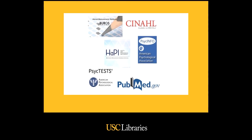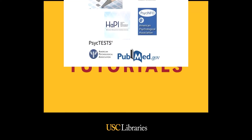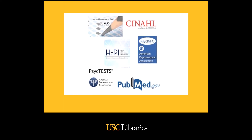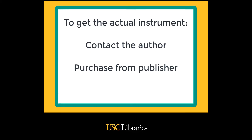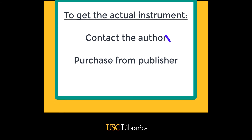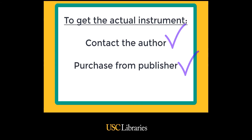Library databases are usually the best resources for identifying relevant, validated, and reliable research instruments. Databases provide information about instruments, but they do not provide access to the instruments themselves. To access and use the actual instruments, you must contact the author or purchase the instrument from the publisher.